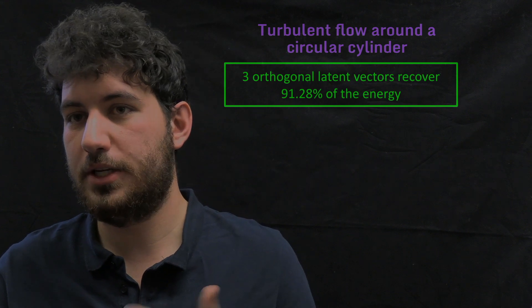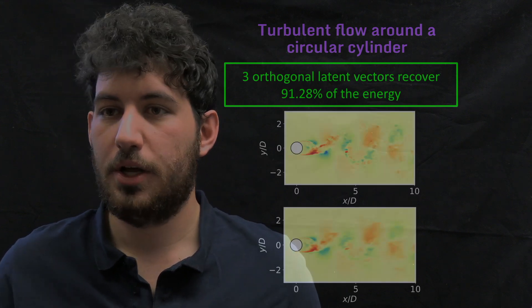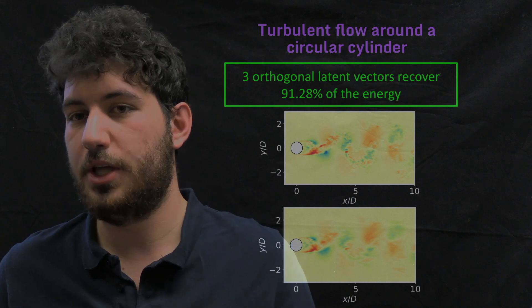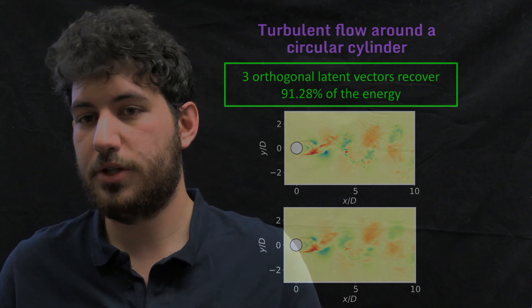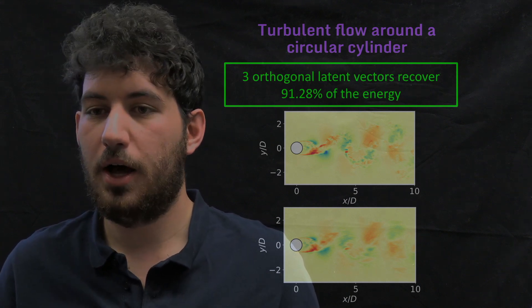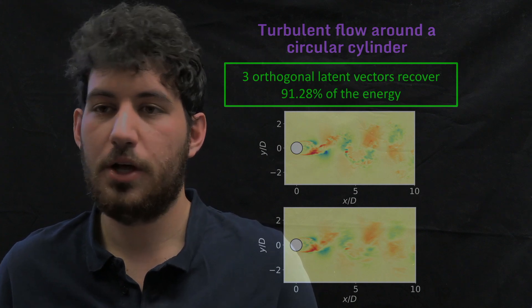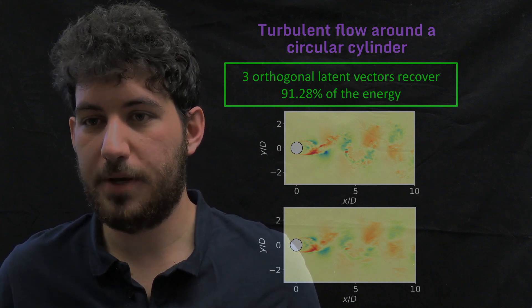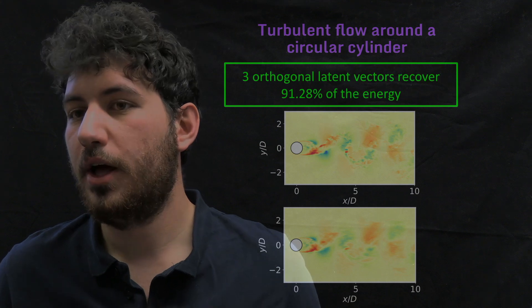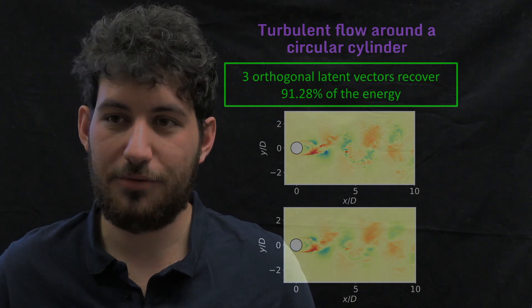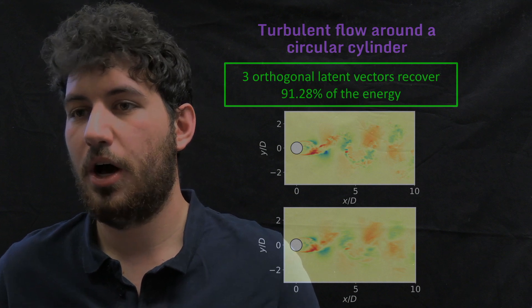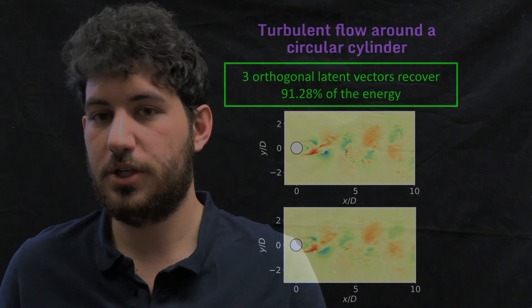But first, let's see what this 92% of energy means. We can compare the original flow field, which is the image on the top, with the reconstructed flow field from GAVI, of an instantaneous snapshot in one slice in the middle of the domain. We see that we are keeping all the flow field structures correctly. And there is some slight filtering in the maximum, minima values of velocity.